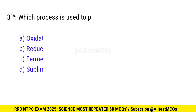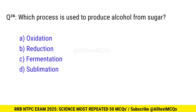Question 38. Which process is used to produce alcohol from sugar? Correct option is C, fermentation.